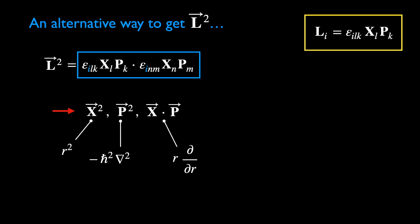We can drop h-bar square and say that p-square is proportional to the Laplacian operator. The dot product of x and p is just the product of r and r-derivative. This is quite easily shown, and we shall prove it in a minute. So we can conclude that L-square is proportional to the product of r-square and the Laplacian plus some r-dependent differential operator.